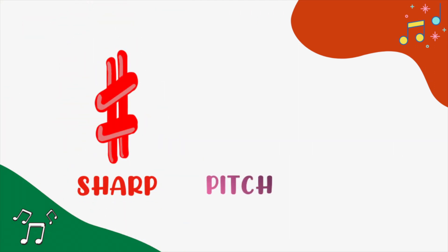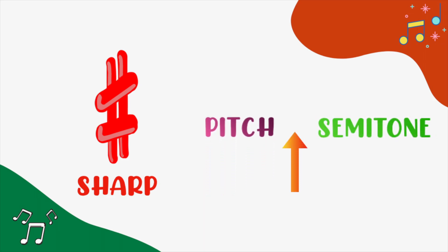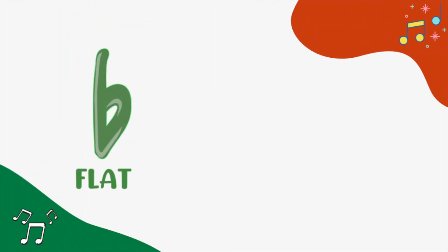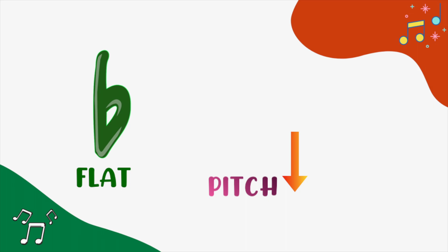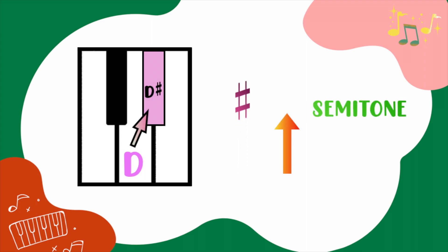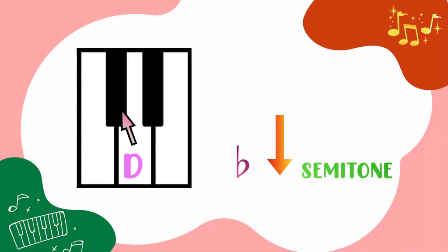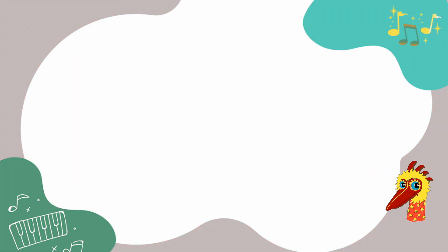Now let's take a look at the sharp. A sharp promotes the note higher in pitch by a semitone, or a half step. The flat, on the other hand, lowers the note in pitch by a semitone. Let's look at the keyboard — from note D, if we move upwards by a half step or a semitone, it is a D sharp. If we go downwards instead, it will be D flat.